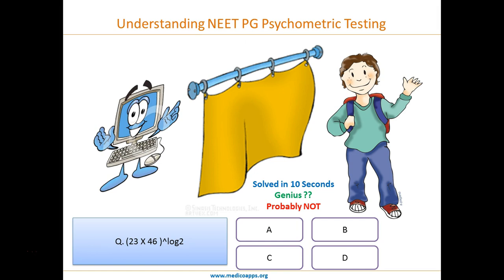So if you are randomly picking options not in sync with the time taken by other students to solve that question — taking into account all the standard deviation of time taken — the computer thinks you are guessing, and it will take that particular parameter into consideration.